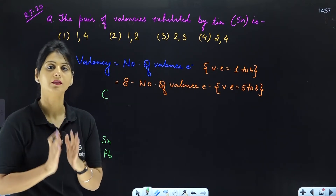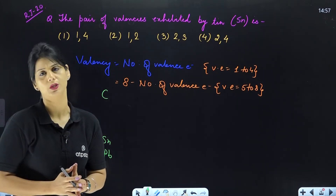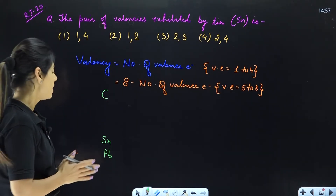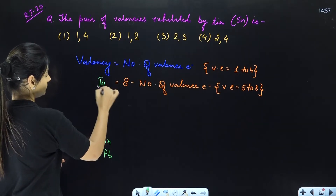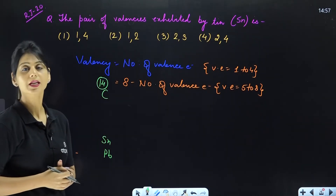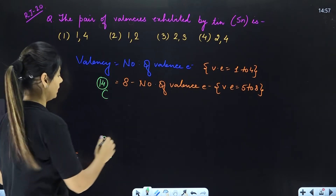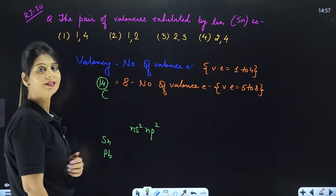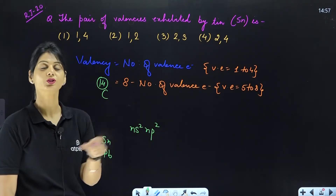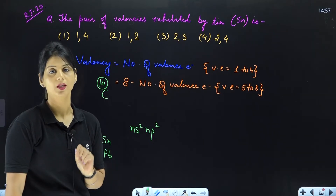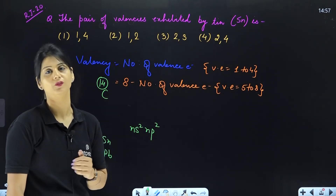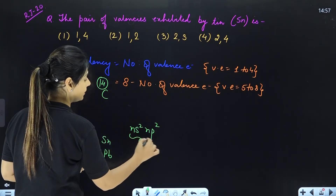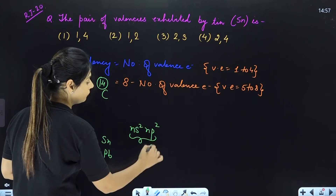When you learn the S block and P block, many questions will become easy. Tin belongs to the carbon family, group number 14. The general electronic configuration of group 14 is NS²NP². The outermost shell is denoted by N. This means there are a total of 4 electrons in the outer shell.